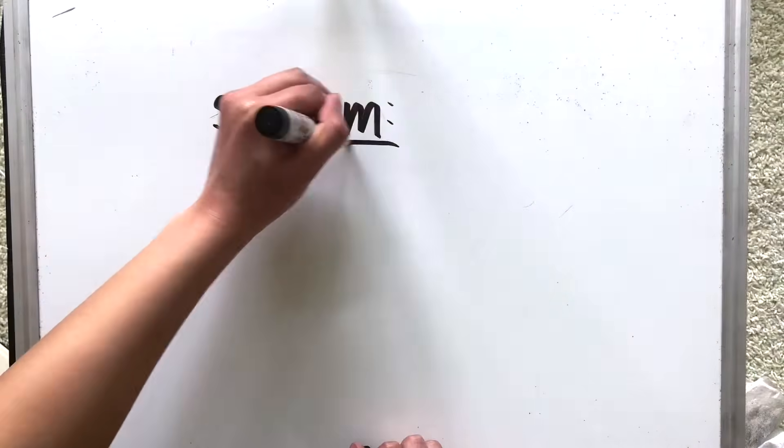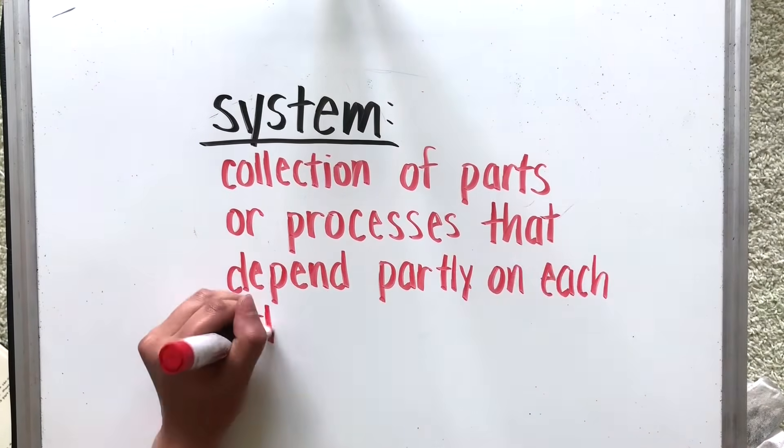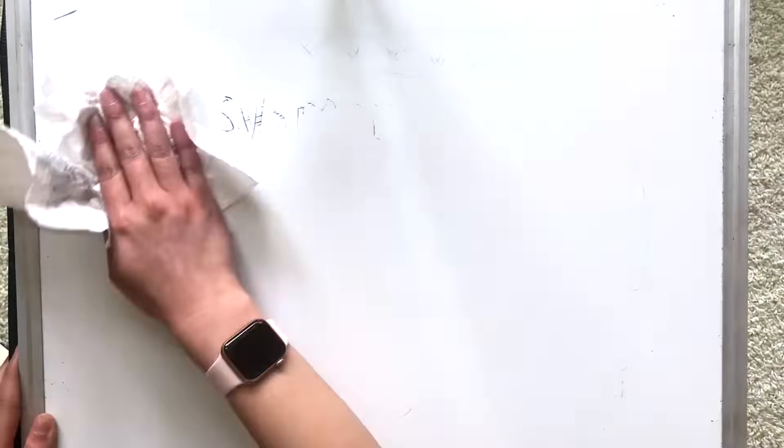But what is a system? A system is a collection of parts or processes that are dependent on each other and work together.